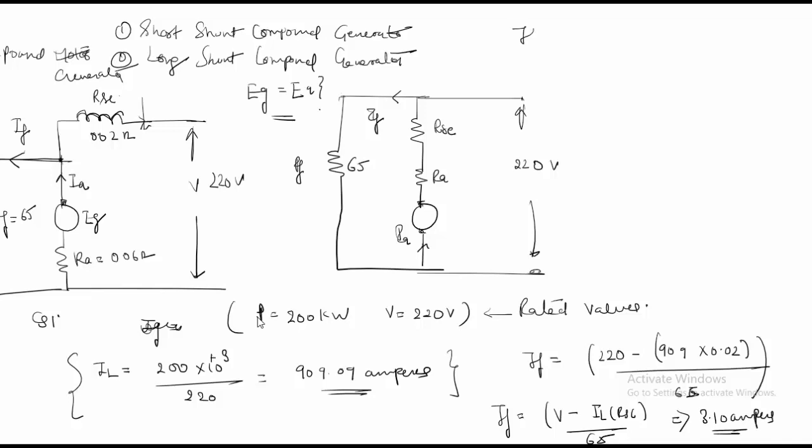So now I have got my IF which is equal to 3.10 and my IL is equal to 909.09 amperes. So my IA is equal to IL minus IF from the equation if you see from this circuit. So that is equal to 905.99.